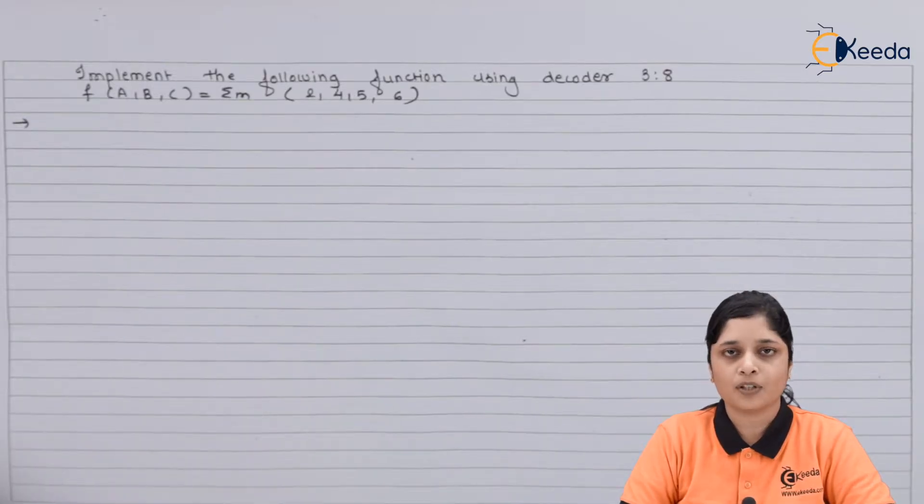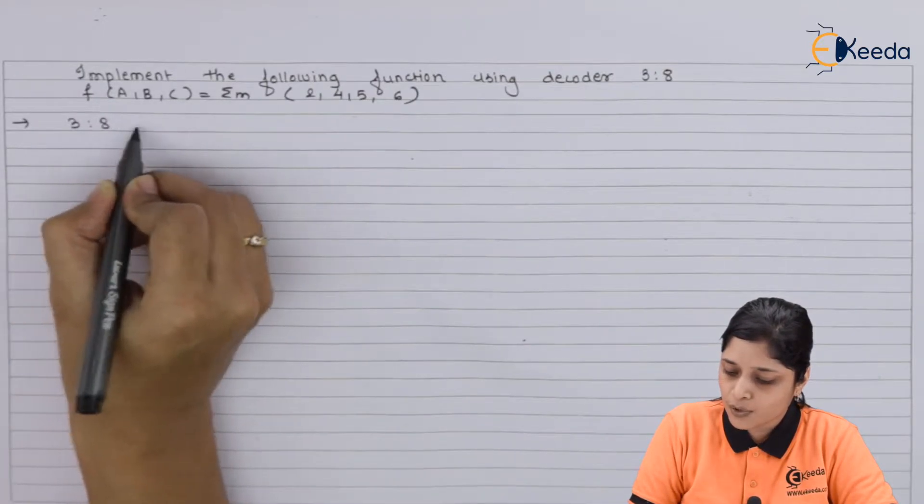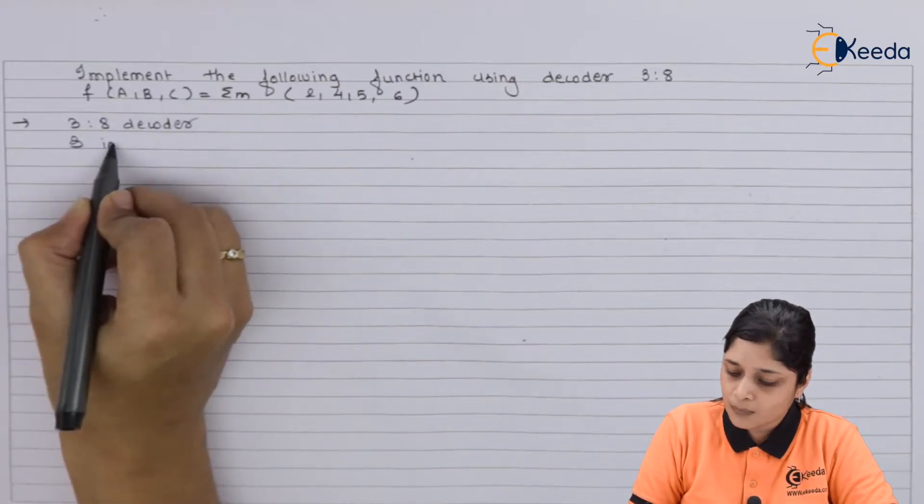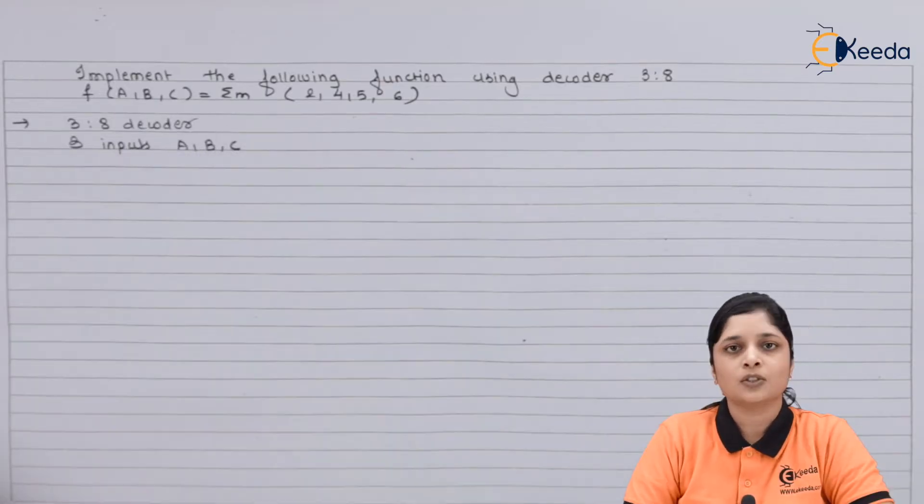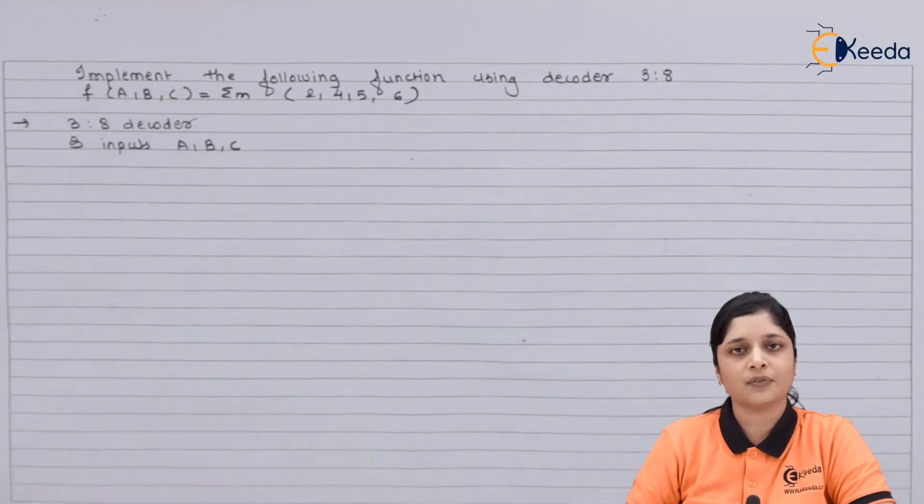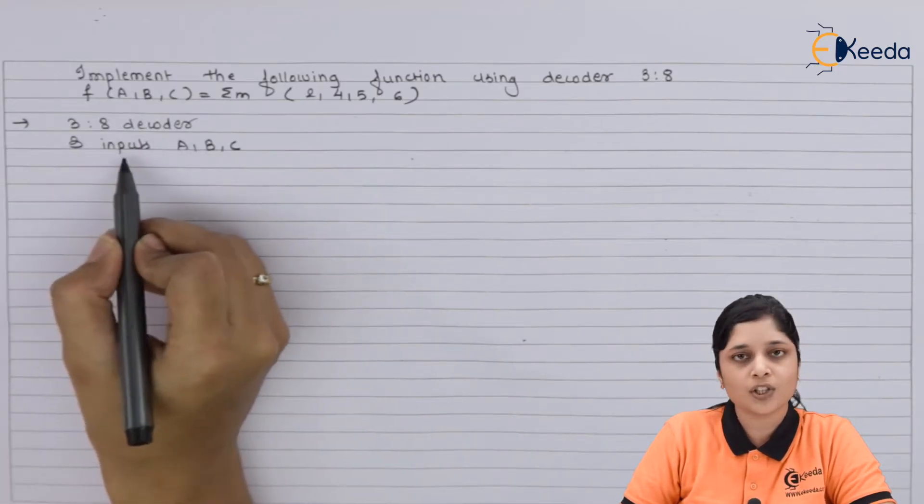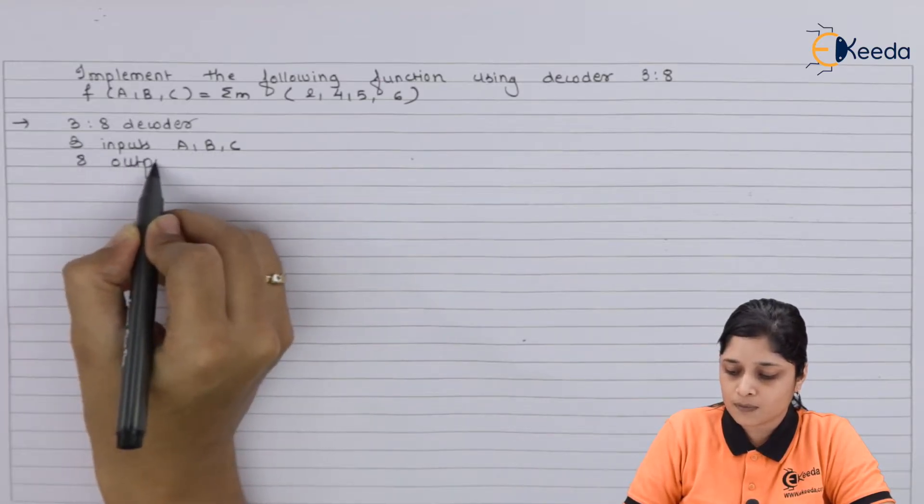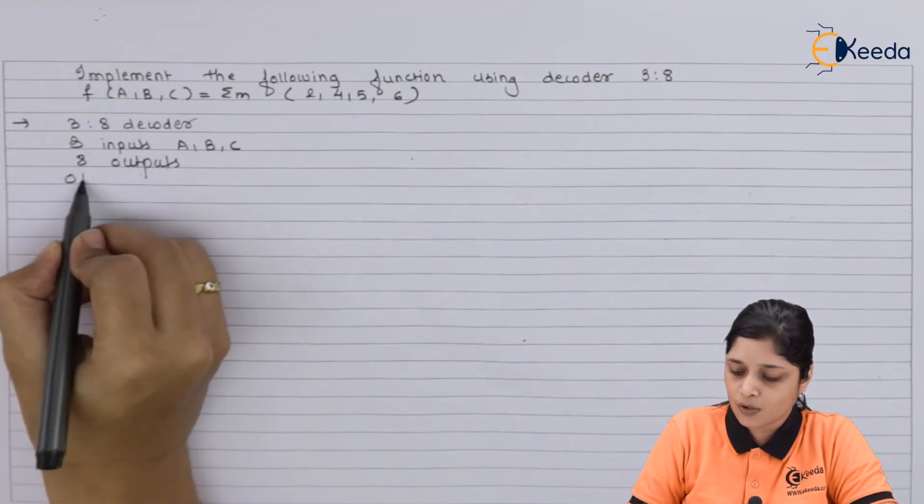Now we will collect some important points about the decoder. So we will use here 3-to-8 decoder. Here 3 inputs are present that are a, b, c. With the use of 3-to-8 decoder you have to design the given expression. From this decoder we can conclude that it has three inputs a, b, and c, and 8 outputs. This function f can be realized with the use of the OR gate.